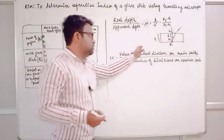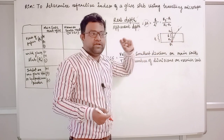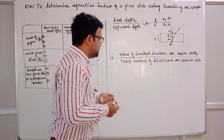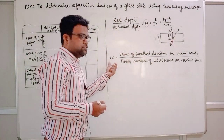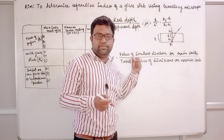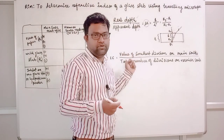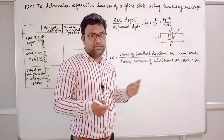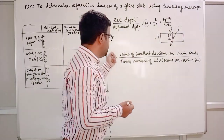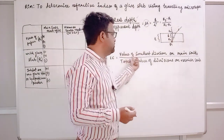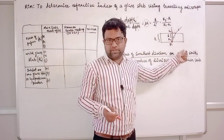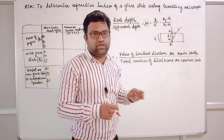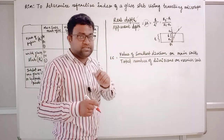A traveling microscope will be given. You can find out its least count using the same method as for vernier calipers — the value of the smallest division in the main scale divided by the number of divisions in the vernier scale. We will go to the apparatus and I will show you how to calculate the least count.